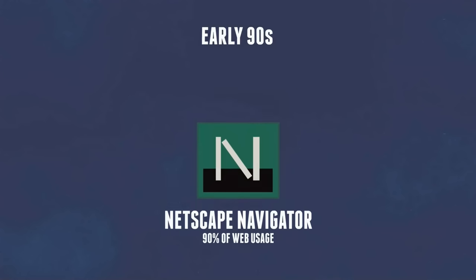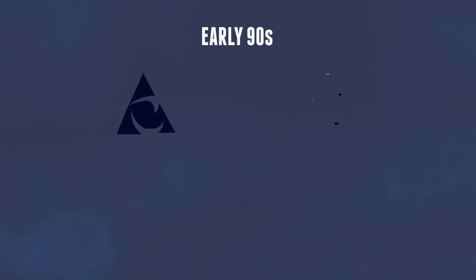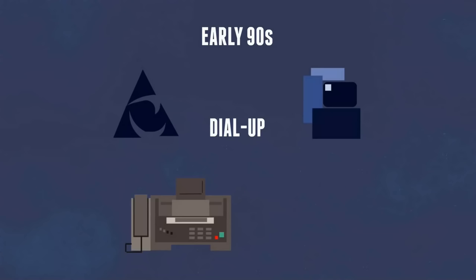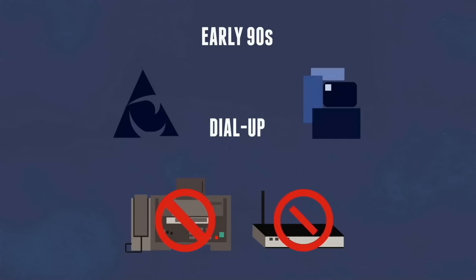In the early 90s, companies like AOL and CompuServe were starting to provide dial-up internet access. Dial-up is a method of connecting to the internet via a telephone line. Your telephone line was plugged into a modem, and the other end was plugged into the phone jack. There was a period in history where you couldn't use your telephone and the internet at the same time.